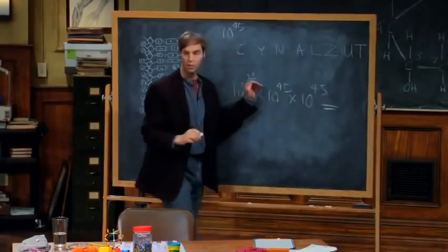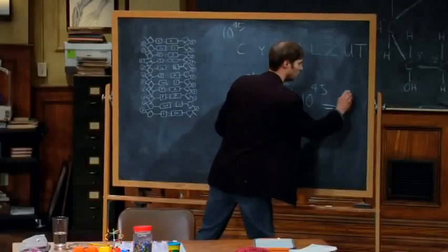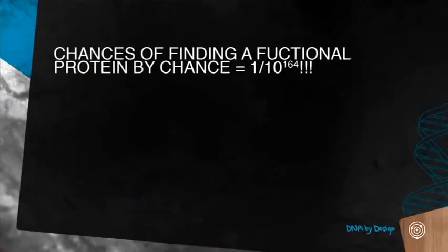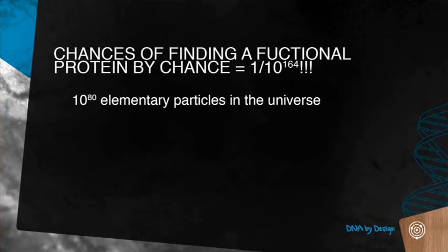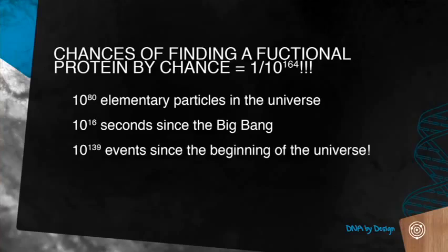So the odds of building even a short functional protein by chance alone is 74 plus 45 plus 45. You can add the exponents when multiplying exponential numbers — that's 10 to the 164th power. There's only 10 to the 80th elementary particles in the entire universe, only 10 to the 16th seconds since the Big Bang, and only 10 to the 139th total events since the beginning of the universe. Now you're starting to get the understanding of why people are very skeptical that the chance hypothesis is going to do the job.